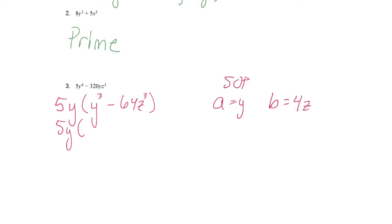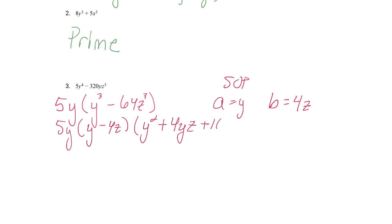So in the first parentheses, the S in SOP stands for same. We started with a minus, so we're going to have a minus here — y and 4z. In the second parentheses: a squared is y squared. Opposite sign from the first, so that's plus ab, which is 4yz. And always plus b squared, which is 16z squared. And that's the answer — we totally did it!